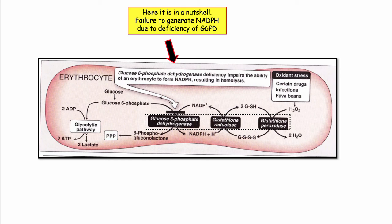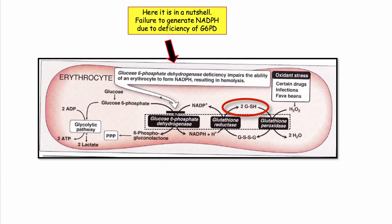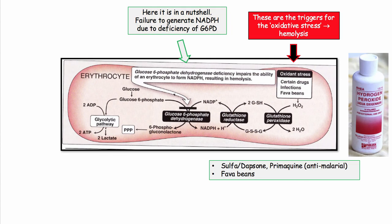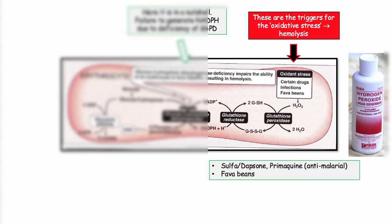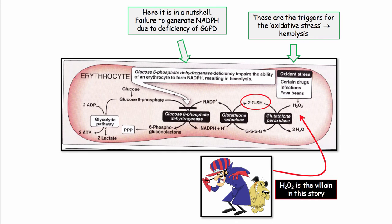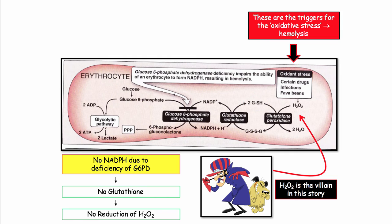Here is the disorder in a nutshell. Shown is the RBC glycolytic pathway. Deficiency of glucose-6-phosphate dehydrogenase impairs the ability of the red cell to form NADPH. NADPH is required to regenerate glutathione reductase and glutathione. The oxidative stress results in generation of hydrogen peroxide. The classic stressors are a number of medications or ingestion of fava beans. In the absence of glutathione, we lack the ability to metabolize peroxide, which is the injurious agent in this story.